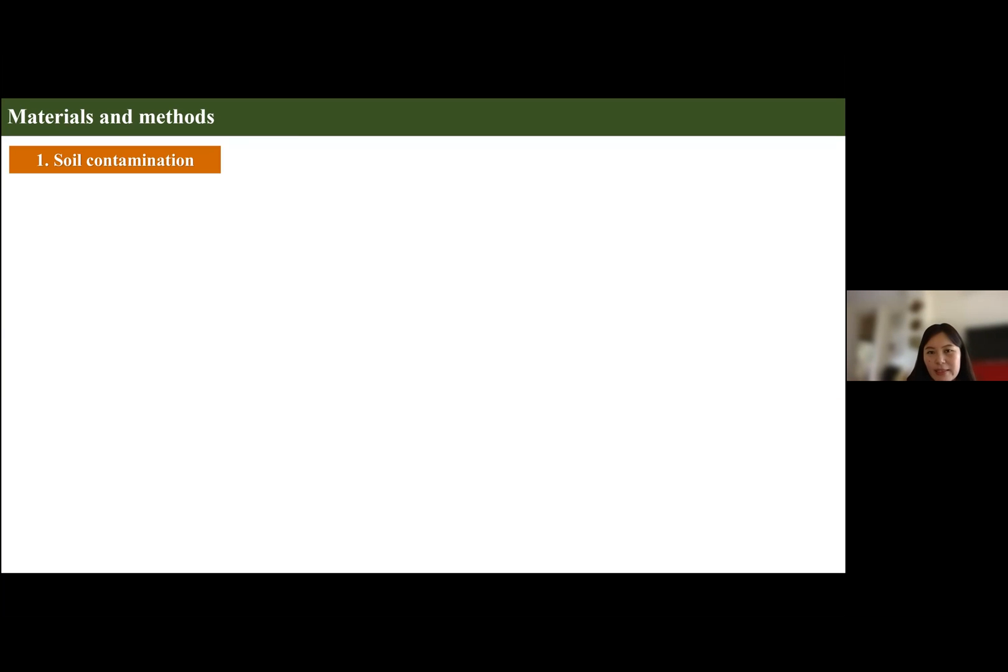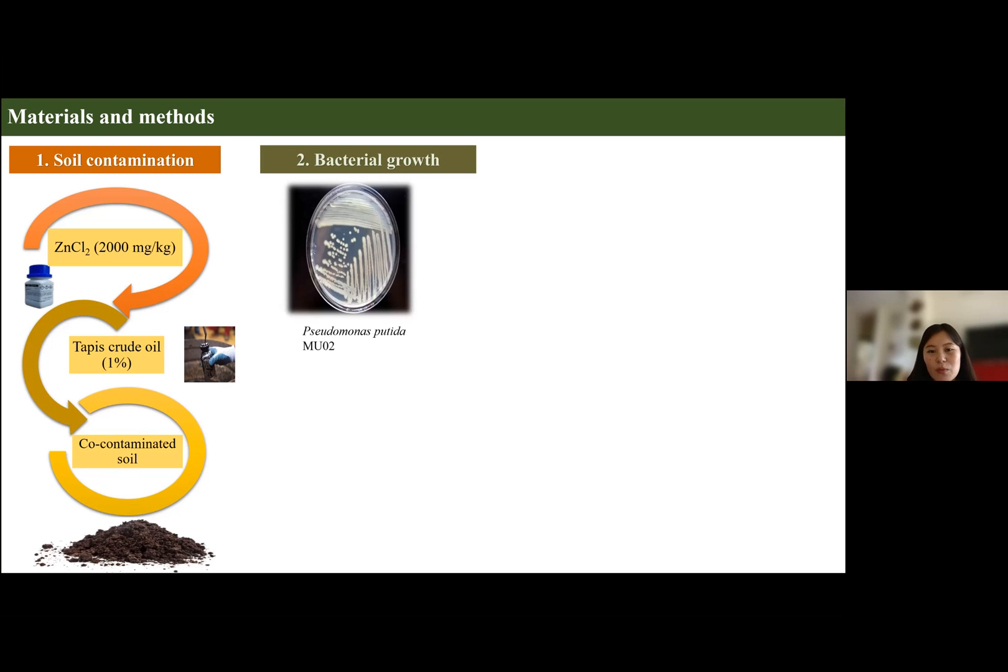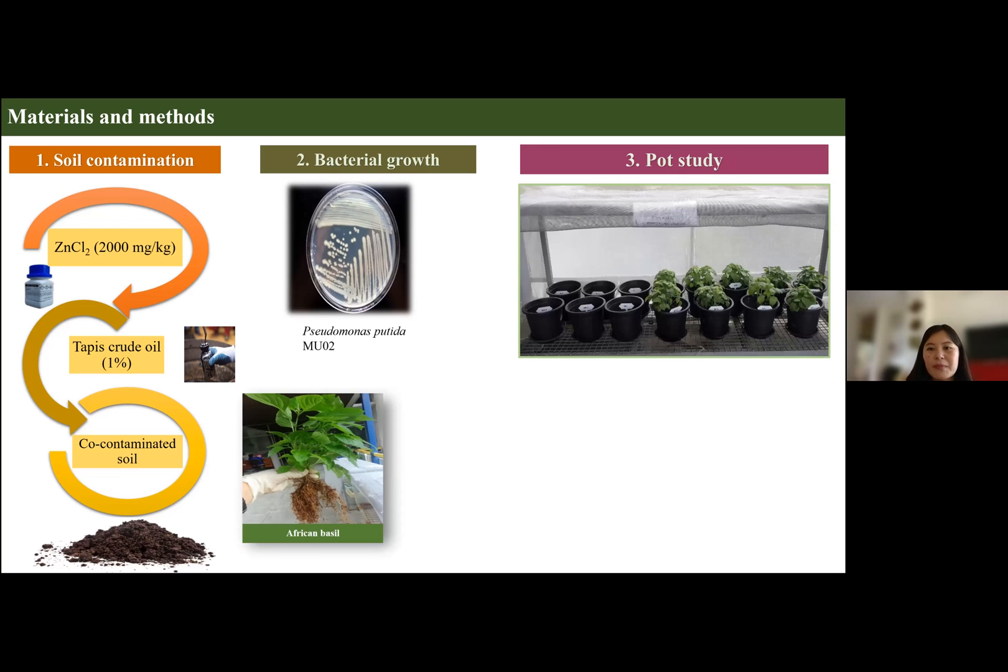What I did in the lab was I added zinc and crude oil to the soil and prepared artificially contaminated soil. Then I grew the bacteria Pseudomonas putida and my plant African basil. I conducted a pot study for 60 days, roughly two months.